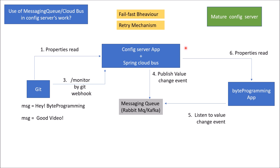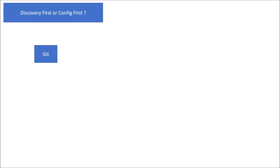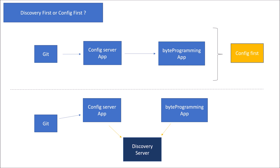Finally, there are two architecture approaches: config first and discovery first. Config first means the client connects to the config server first to fetch its configuration, independent of the discovery server. Discovery first means the client application reads configuration via the config server after locating services through the discovery server. Both approaches have their own advantages and disadvantages. That covers everything about config server in microservice architecture. If you like the video, press like or leave feedback in the comments, and subscribe for more upcoming videos.